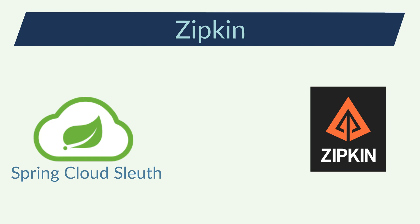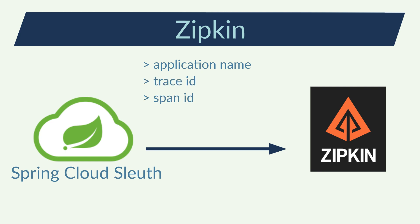For that, let's go with Zipkin. Zipkin will work with Spring Cloud Sleuth. Sleuth will send the microservice name, the trace ID, the span ID, the initial time, and the end time for each request for each microservice. This will be collected by Zipkin to show some very useful information.